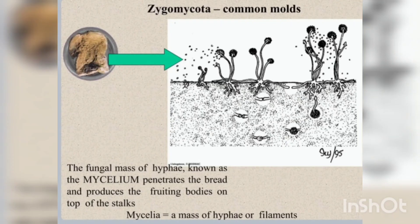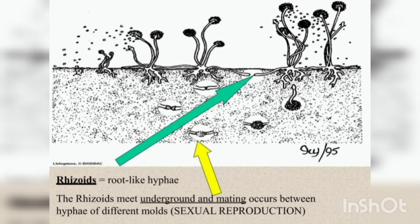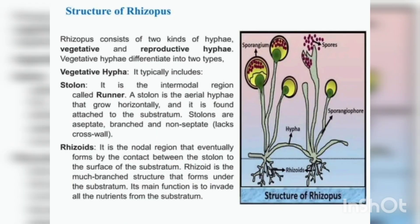The mycelium forms a cottony white growth on substrata. It is composed of a network of tubular non-septate cenocytic hyphae. As the young mycelium grows, it differentiates into three kinds of hyphae: stolons, rhizoids, and sporangiophores. The root-like rhizoids are formed inside the substratum, stolons are horizontal hyphae on the surface of the substratum, and sporangiophores arise from the stolons and are seen above the substratum.